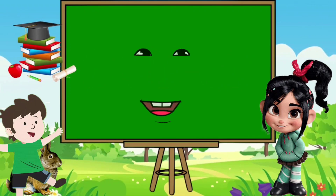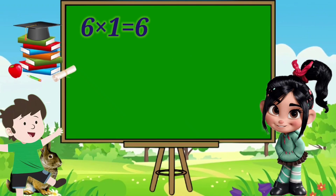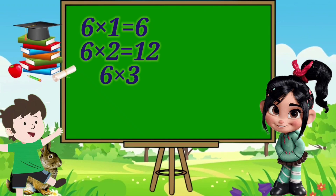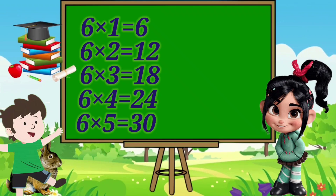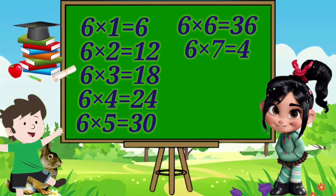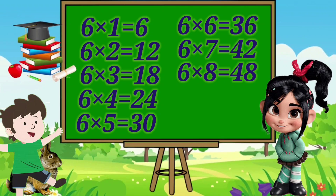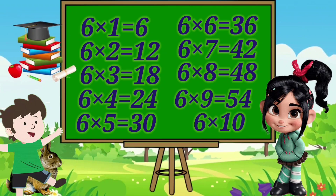प्यारे बच्चों, चलिए एक बार फिर से लो राते हैं। 6, 1, 6. 6, 2, 12. 6, 3, 18. 6, 4, 24. 6, 5, 30. 6, 6, 36. 6, 7, 42. 6, 8, 48. 6, 9, 54. 6, 10, 60.